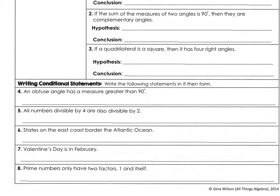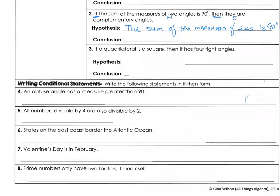The next example: 'If the sum of the measures of two angles is 90 degrees, then they are complementary angles.' Again, we have an if-then statement. Our hypothesis is 'the sum of the measures of two angles is 90 degrees,' and the conclusion is 'they are complementary angles.'